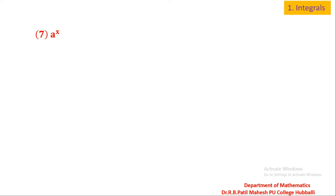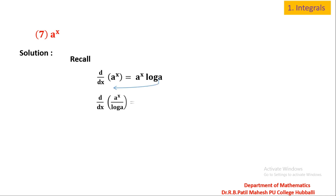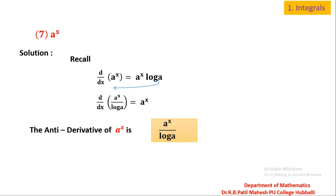Further: what is the anti-derivative of aˣ? I recall d/dx of aˣ, which is aˣ × log a. Taking log a to the left side: d/dx of (aˣ / log a) is equal to aˣ. So the derivative of (aˣ / log a) is aˣ, and the anti-derivative of aˣ is aˣ / log a.